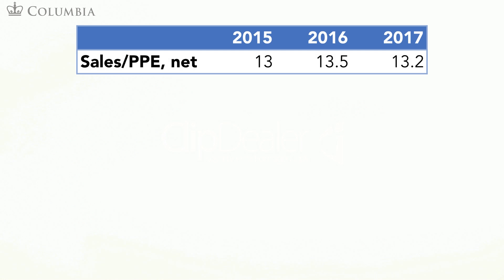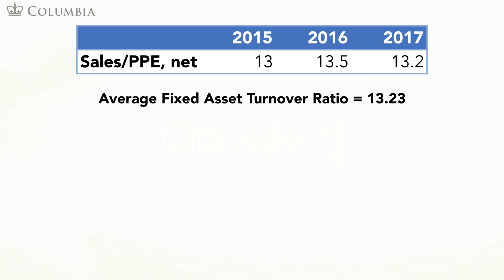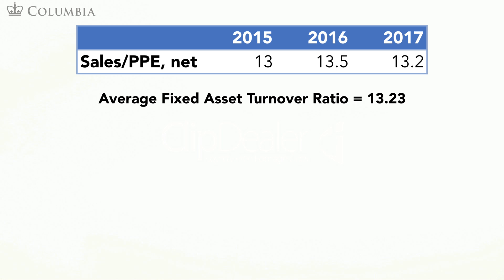In our case, this ratio is fairly constant, so we will use the average of this ratio, 13.23, to estimate PP&E in 2018. We assume that fixed asset turnover in 2018 is 13.23, defined as sales in 2018 over net PP&E in 2018. Since we know sales and the ratio, we can solve for net PP&E.